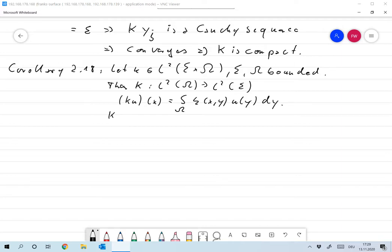And I say that K, the operator capital K, is compact. And that would mean that all convolutions, all operators of this type, are actually compact.